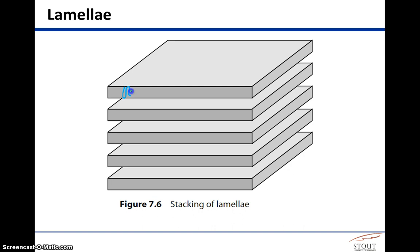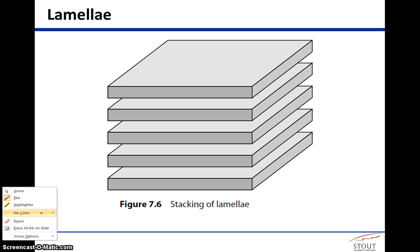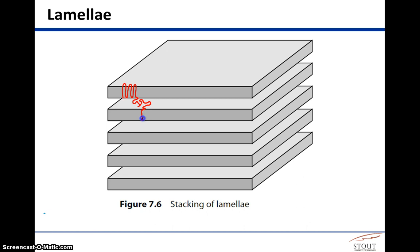There's a crystalline region, then amorphous material, and then it crystallizes some more. The chain that spans these is called a tie chain because it ties together more than one crystalline domain in the same material.